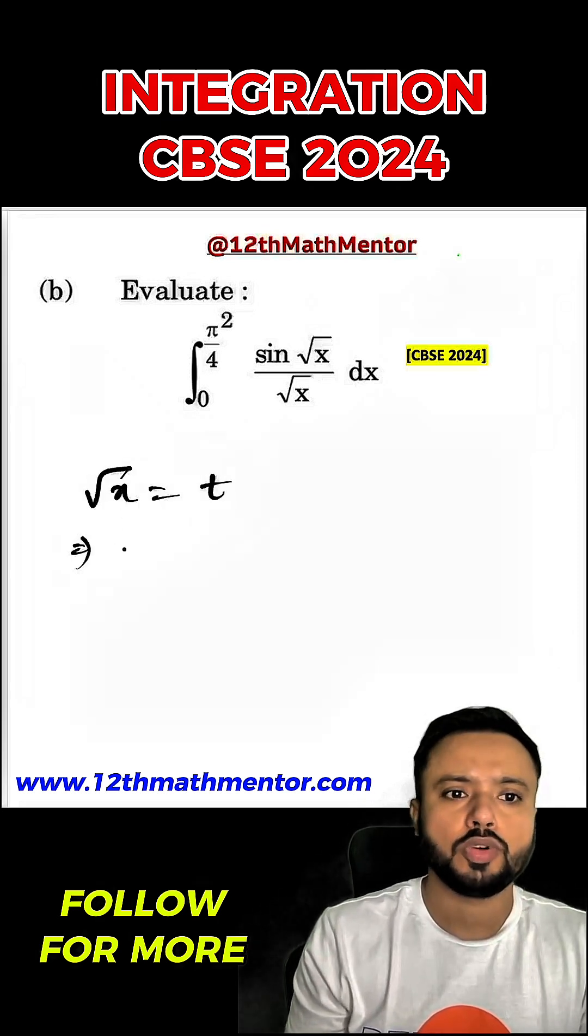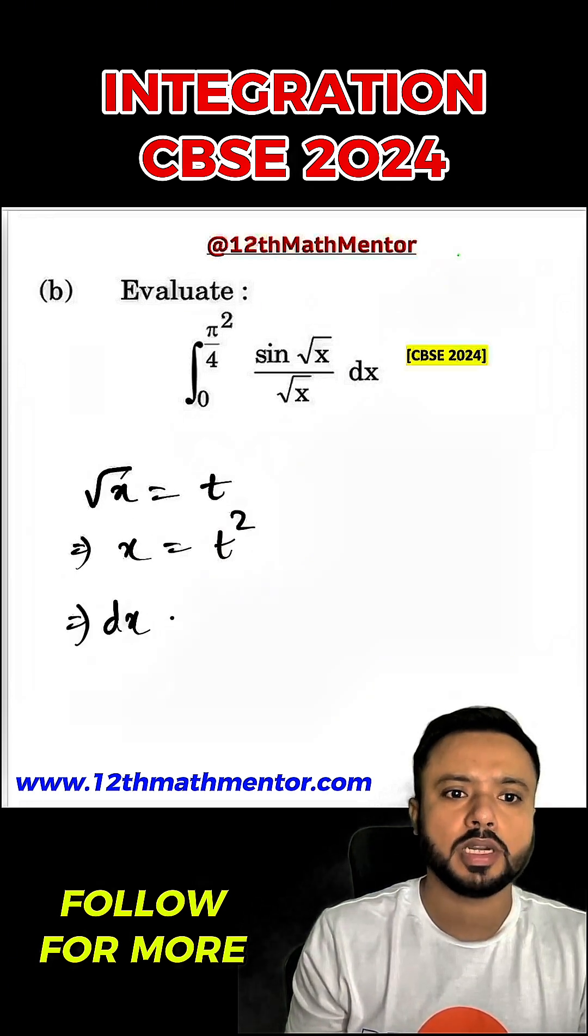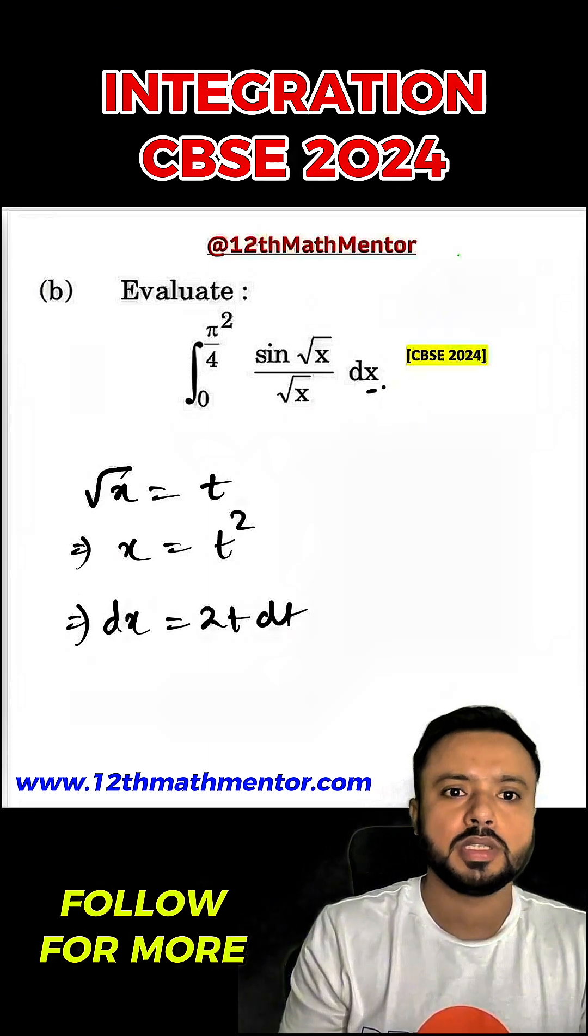And now I'm going to square both sides, so I'll get x equals to t square. So now we'll differentiate both sides, so I'll get dx equals to 2t dt. That means this dx can be replaced by 2t dt.